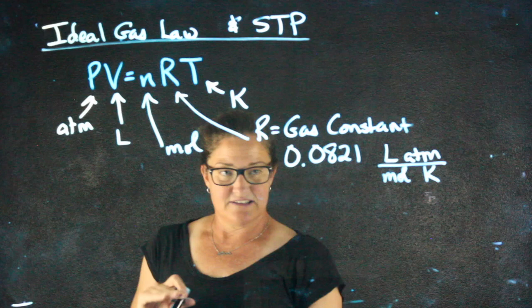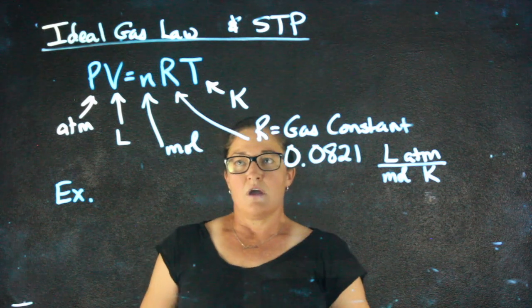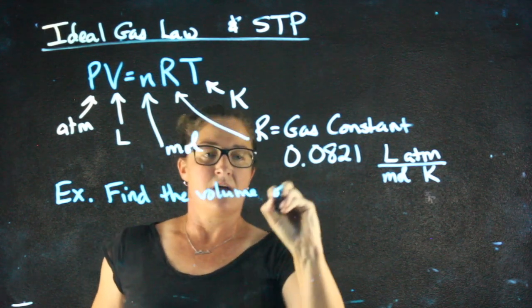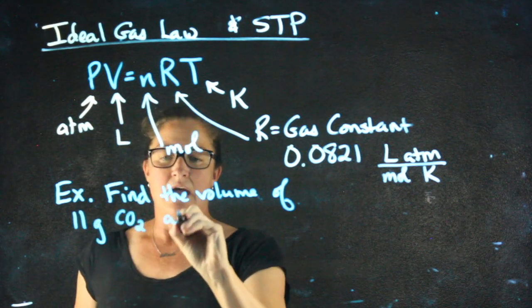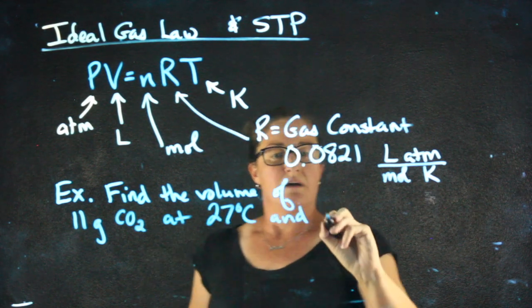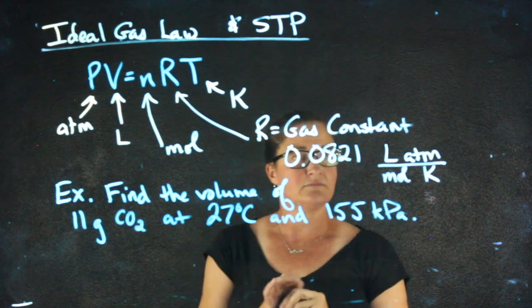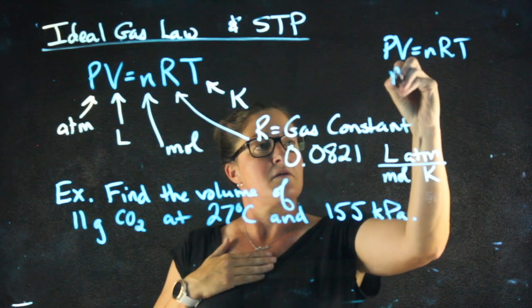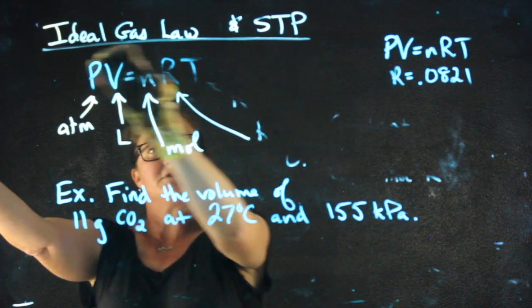So if we want to take a look at an example problem, one might look like this. We are going to find the volume of 11 grams CO2 at 27 degrees Celsius and 155 kPa. Per usual, you'll be given these formulas and you'll be given the constants. You need to know what units to plug in.